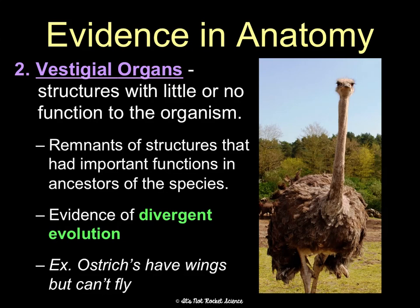We believe that ostriches evolved from an ancestral bird that did fly. If you have the PowerPoint or search YouTube, there's a really cool four-minute video clip about evidence of evolution in the human body, which basically points out some vestigial structures that humans have.